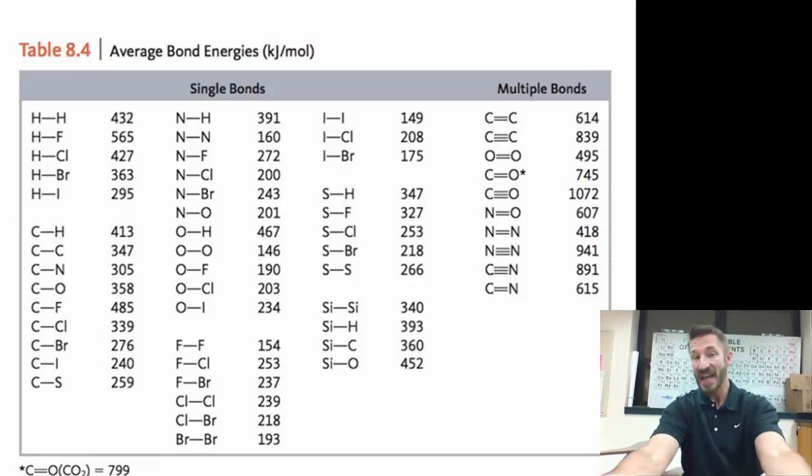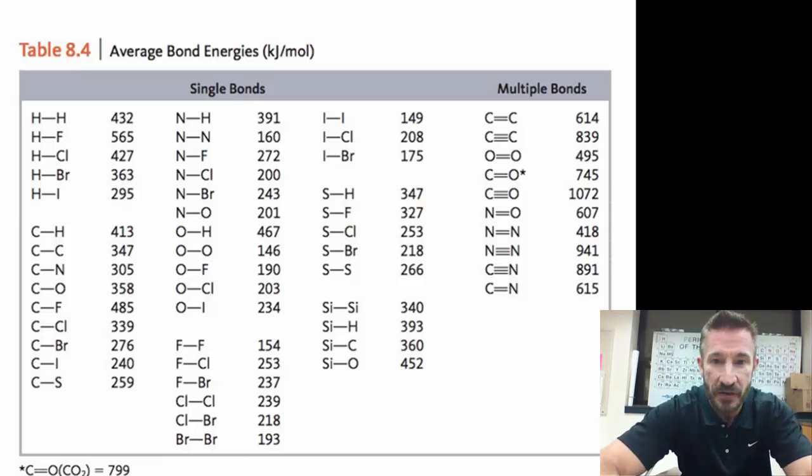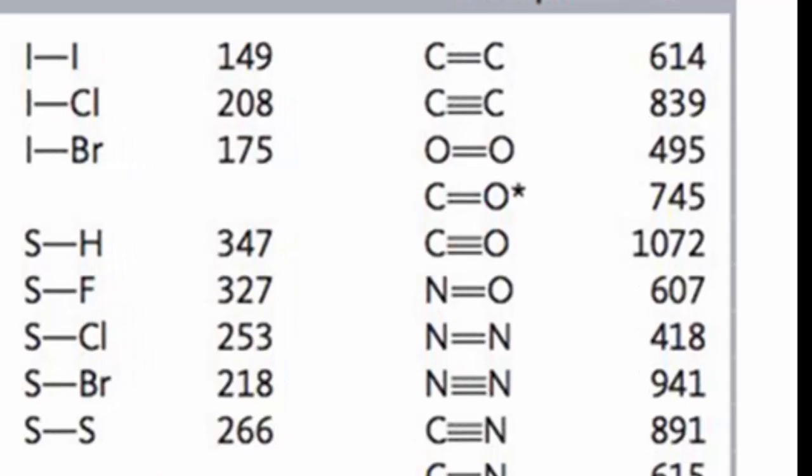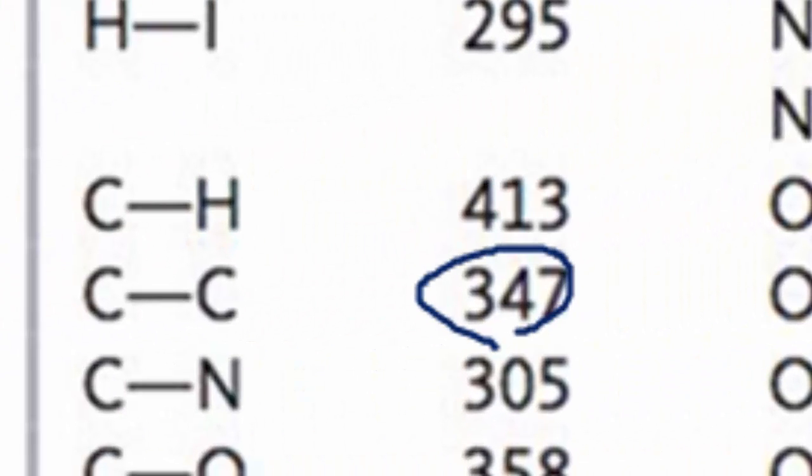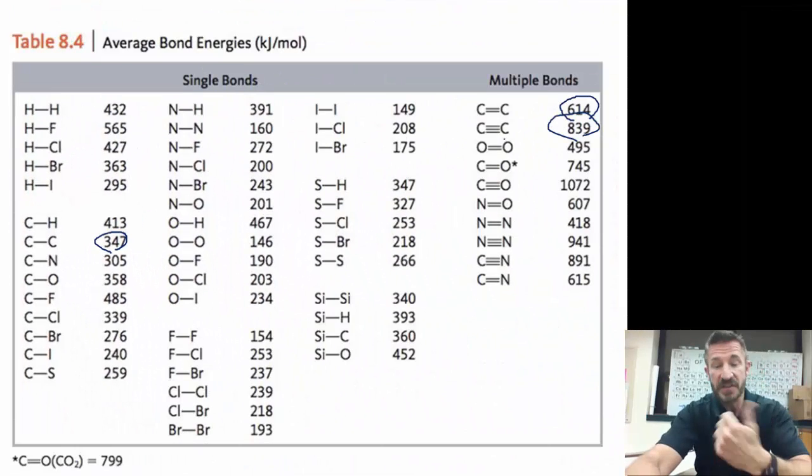So this is a bond energy table that you should be using. This is one from our textbook. A couple things you might notice on this is notice that it takes more energy to break multiple bonds. For example, if you look at a triple carbon bond, it's 839 versus a double carbon bond, which is 614, versus a single carbon bond, which is 347. So we could say a double stronger than a single, and a triple stronger than a double.